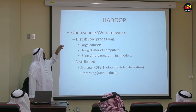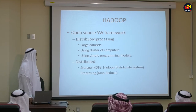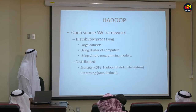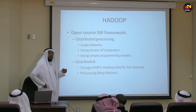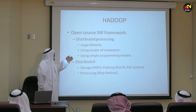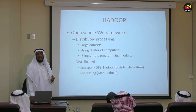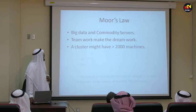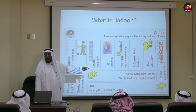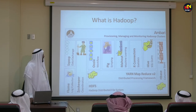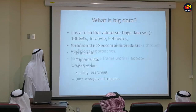Hadoop is an open-source software for distributing the processing of large data sets using clusters of computers and using simple programming models. There are two main parts in Hadoop — later called the Hadoop ecosystem. There is the storage part: the Hadoop Distributed File System. And the processing part: MapReduce. Later on, MapReduce will turn into something called YARN — Yet Another Resource Negotiator — which we call Hadoop 2, or MapReduce 2, the new version.